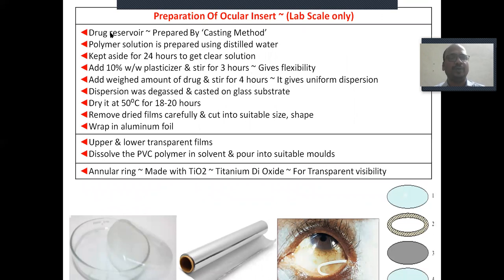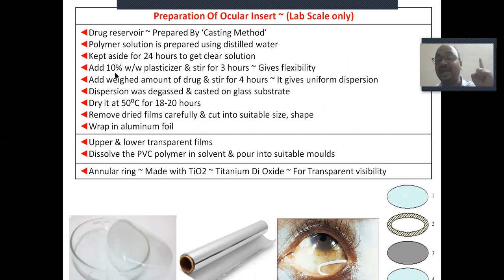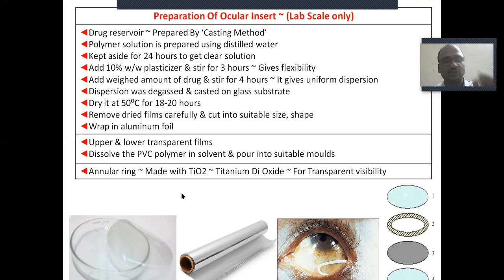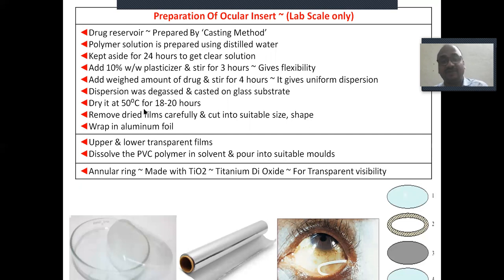Preparation of accuserts is done by the solvent casting method. First, prepare the polymer solution and keep aside for 24 hours. Add 10% w/w plasticizer — this gives flexibility to the accusert. Add the required amount of drug and stir for four hours. Then degas to remove gas, and cast into a suitable petri dish. Dry at 50°C for 18 to 20 hours, remove the dried film, cut it to size, and pack in aluminium foil.